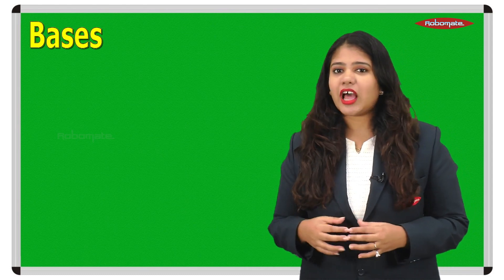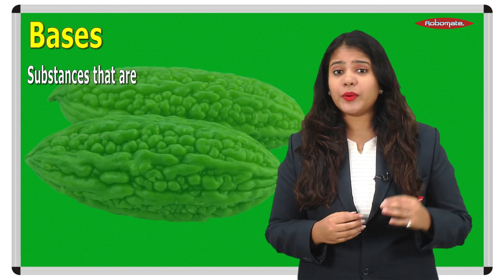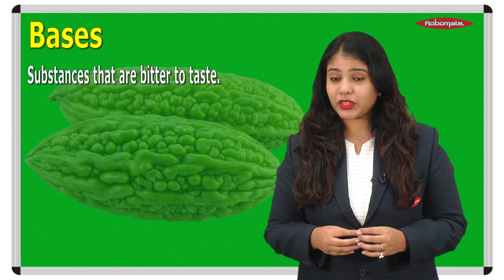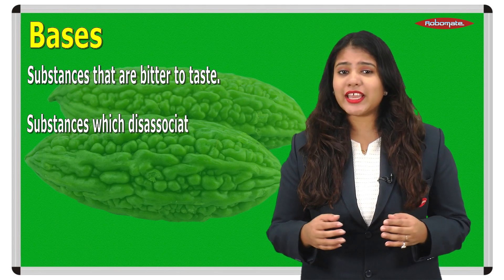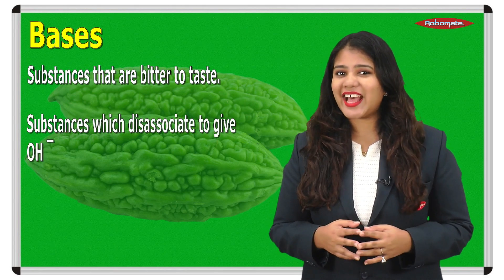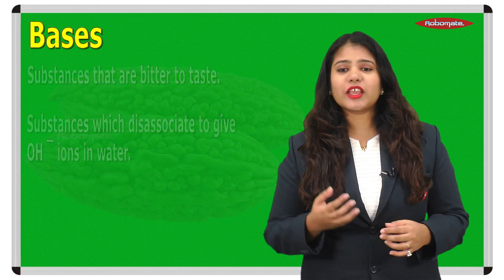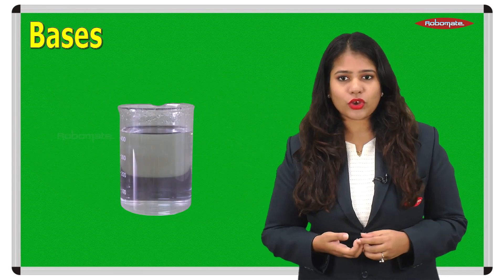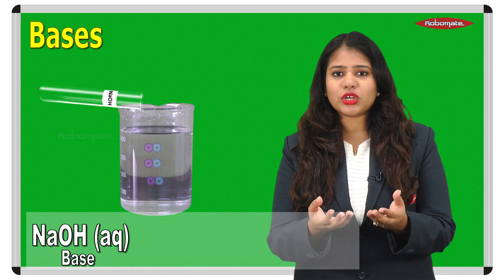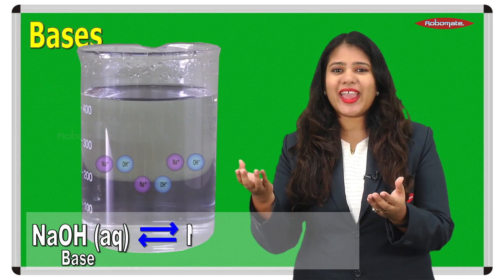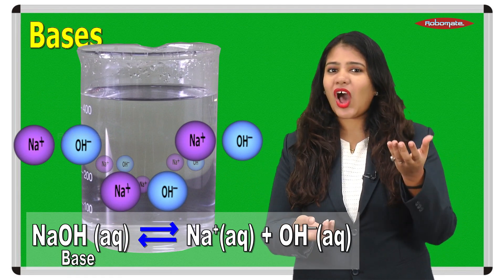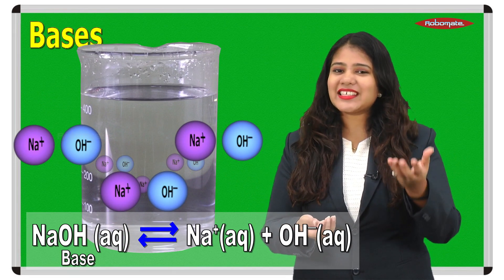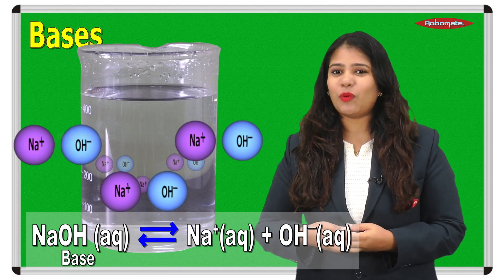Let us try to understand bases. Bases are defined as substances that are bitter to taste. Bases can also be defined as substances which dissociate to give OH⁻ ions in water. For example, NaOH when added to water will dissociate into Na⁺ and OH⁻. So this molecule will have a hydroxyl ion as the only negatively charged ion in water.